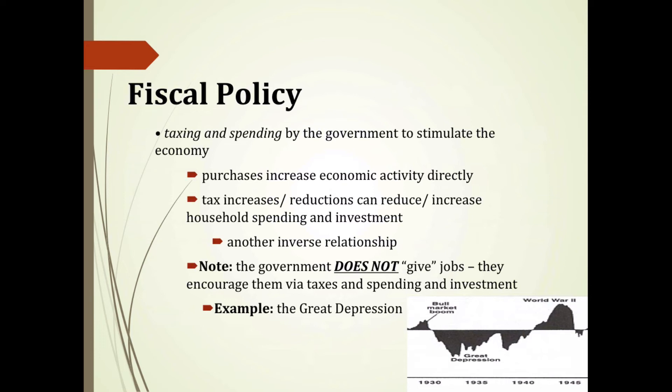The best example of fiscal policy in our economic history is the Great Depression. At its worst, the unemployment rate in America was 25% — one in four people were unemployed. It was only through our involvement in World War II and a seriously heavy amount of government spending on war supplies and goods that we were able to pull ourselves out of that financial crisis. American businesses were unable to spend and invest, so the government decreased taxes on producers and increased spending on war-related goods and supplies.